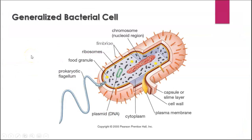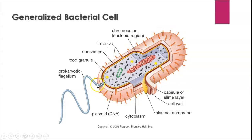This is a generalized bacterial cell — understanding the structures here: we've got our nucleoid region with the chromosome in it, lots of ribosomes in the cytoplasm, various food granules, a flagellum, and plasmid DNA separate from the chromosome. We have a cell membrane and a cell wall, and this particular one also has a capsule or slime layer. There are pili or fimbriae that stick out from the surface on some bacteria, and some also have one or multiple flagella to move around. That ends the notes on part three.